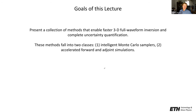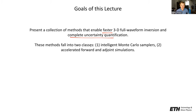The goals of this lecture are to present a collection of methods that enable faster 3D full waveform inversions, but also a more complete and honest uncertainty quantification. I will present two classes of methods: first, more intelligent Monte Carlo samplers that allow uncertainty quantification for interestingly large problems; and second, methods for accelerated forward and adjoint simulations of wave propagation.